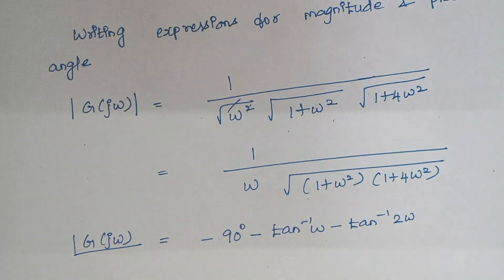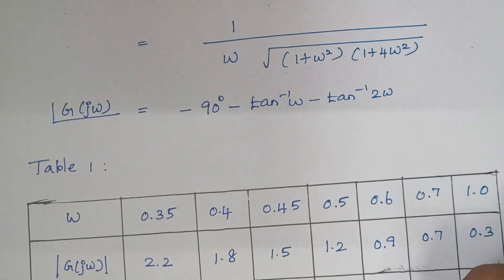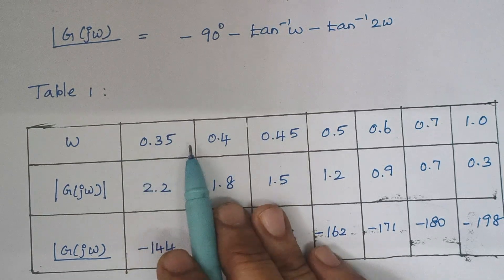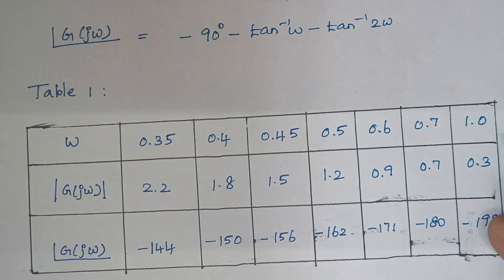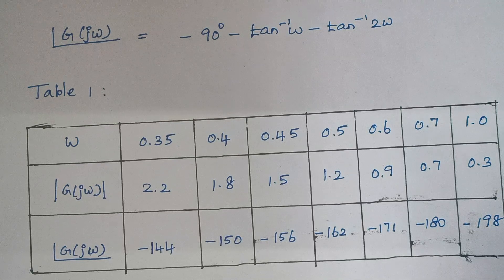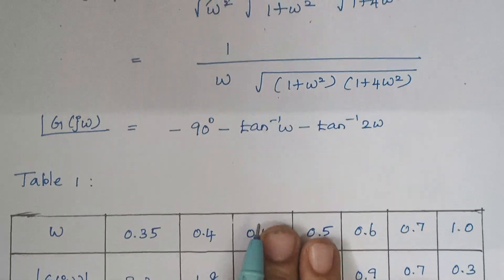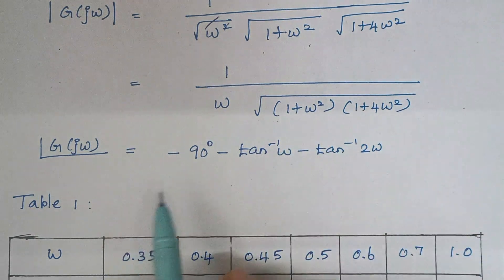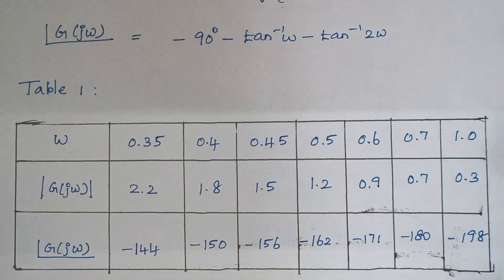The next step is to select random values of omega and calculate the values of magnitude and phase angle. The value of omega is selected by us — it starts from 0.35 and extends to 1.0. There is no restriction on which values to take. Substitute the value of omega into the magnitude expression and write down the respective values, then similarly substitute into the phase angle expression.